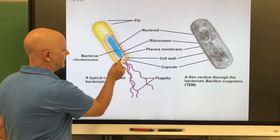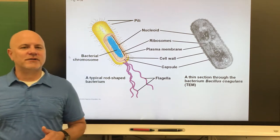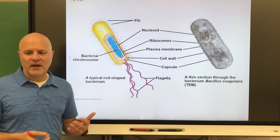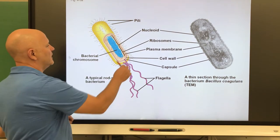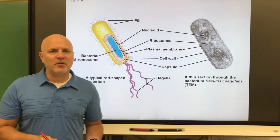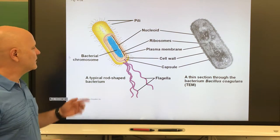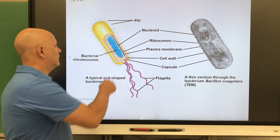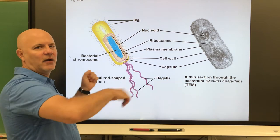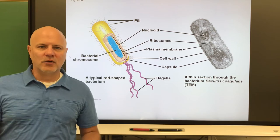Next, they have ribosomes. All those little dots we see are ribosomes — structures that synthesize proteins. Next is a nucleoid, or nucleoid region. This is the part of the prokaryotic cell where DNA is located. Their DNA is in a single circular loop — it looks like a big mess, but if you spread it out it would just be a big circular loop. We say they have one chromosome.